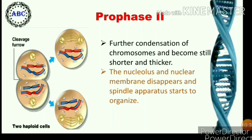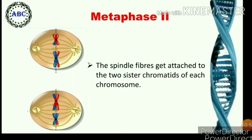In prophase second, further condensation of chromosomes takes place and chromosomes become still shorter and thicker. The nucleolus and nuclear membrane disappear, and the spindle apparatus starts to organize. In metaphase second, the nucleolus and nuclear membrane are absent, the spindle apparatus is present, and the two sister chromatids of each chromosome distinctly get separated from each other due to repulsion, but remain attached to the centromere. The chromosomes become more condensed, shorter, and thicker.